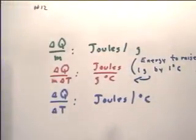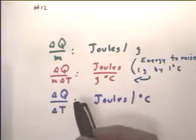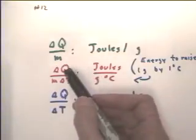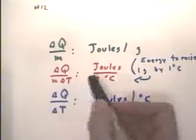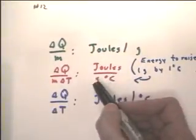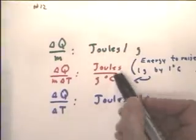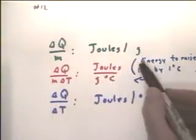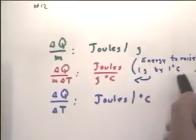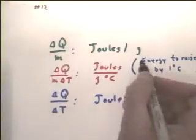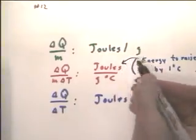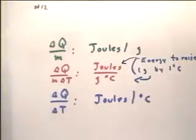We want something that doesn't depend on the temperature change or the mass. We want some property of the substance. The way to get that is to simply take delta-Q and divide it by the mass times delta-T, which gives us the number of joules per gram Celsius degree. This is the energy required to raise one gram by one Celsius degree.